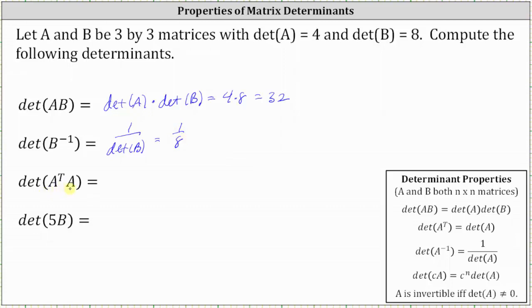Next, we have the determinant of the product of A transpose and A. Because we have a determinant of a product, this is equal to the determinant of A transpose times the determinant of A. The determinant of A transpose is equal to the determinant of A, so we just have the determinant of A times the determinant of A, which is four times four, which is equal to 16.